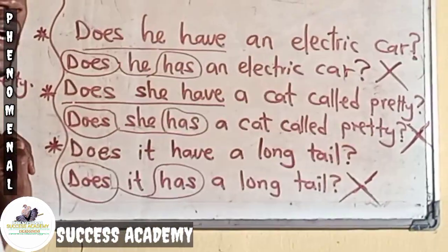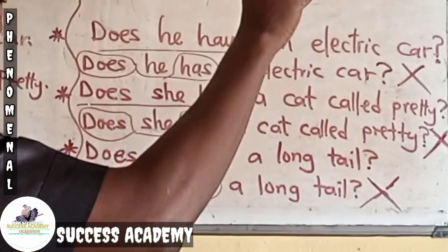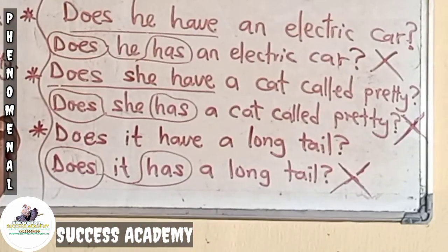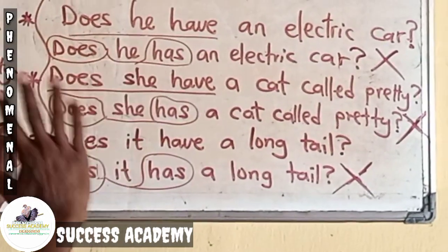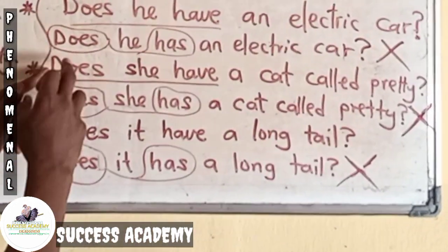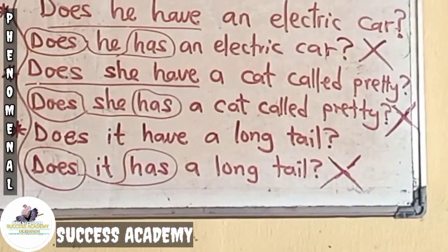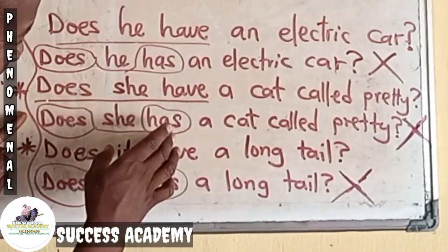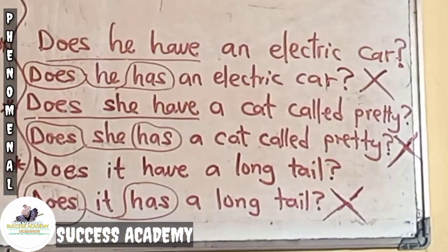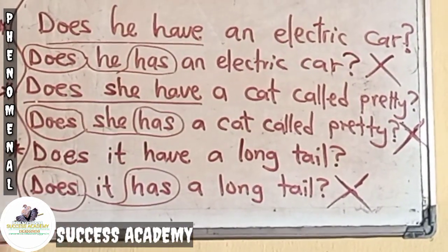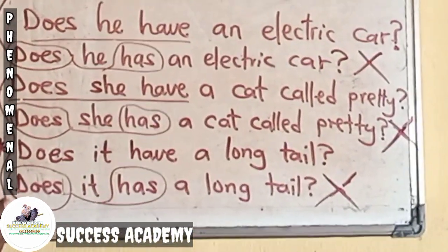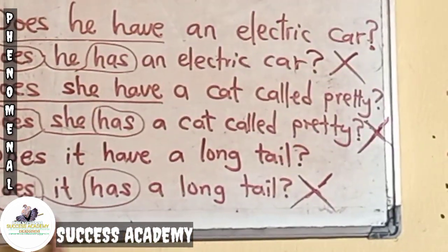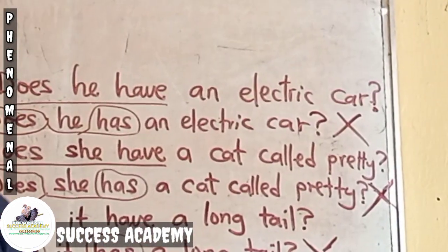Does he have an electric car? This sentence is correct. If you say 'Does he has an electric car?' it is wrong — we do not use 'does' and 'has' together. Example two: Does she have a cat called Pretty? This is correct. But 'Does she has a cat called Pretty?' is wrong. Last example: Does it have a long tail? This is correct. But 'Does it has a long tail?' is wrong.